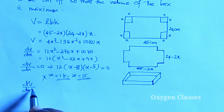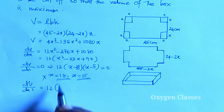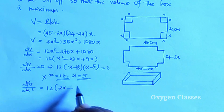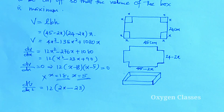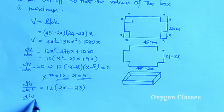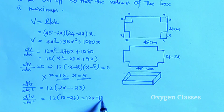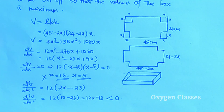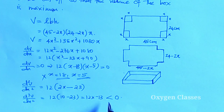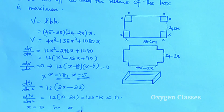The second derivative d²V/dx² = 12(2x − 23). Substituting x = 5: 12(10 − 23) = 12(−13) = −156, which is less than zero. Since the second derivative is negative, x = 5 is confirmed as a point of maximum.